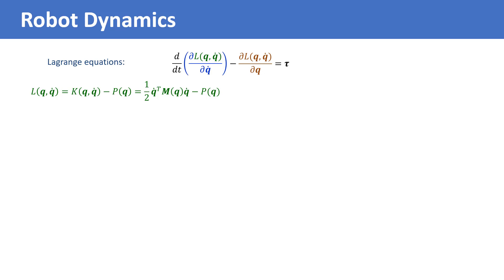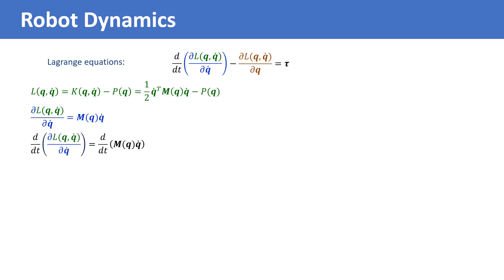We calculate each of the terms in the Lagrangian equations. The partial derivative of the Lagrangian with respect to q-dot is m of q times q-dot. Note that m is a symmetric matrix and the potential energy function p is independent of q-dot, so the derivative of p with respect to q-dot is zero. Then we take the time derivative of this term. Using the product rule, the derivative equals m-dot of q times q-dot plus m of q times q-double-dot.